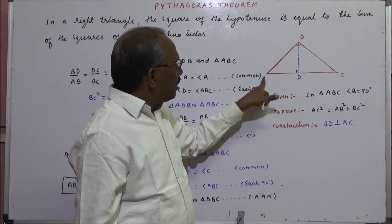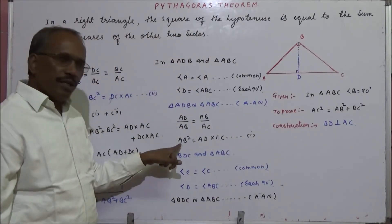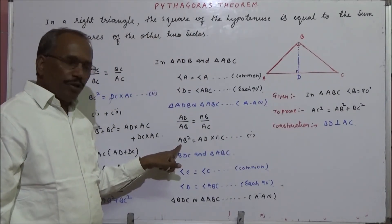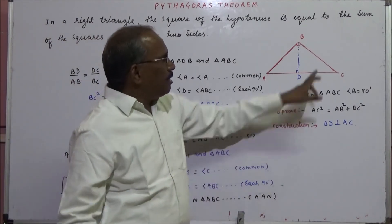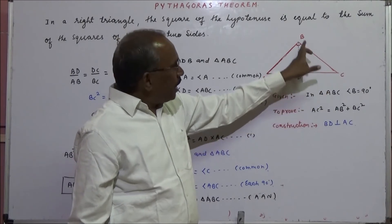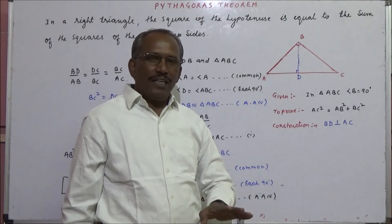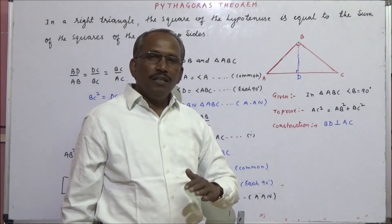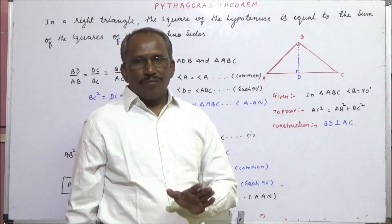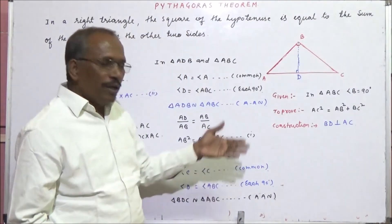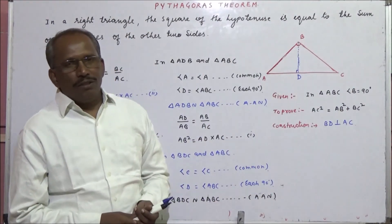After showing triangles similar, the one-one correspondence of vertices is important when writing two triangles as similar. If the correspondence is wrong, then the corresponding sides will be wrong. Thank you.